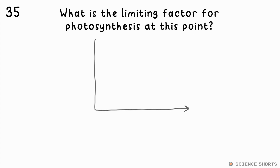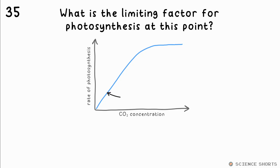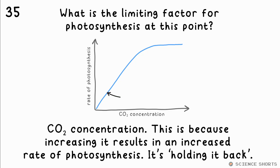Question 35. What is likely to be the limiting factor for photosynthesis here? It's the CO2 concentration. We know this as we can see that increasing this results in an increased rate of photosynthesis.